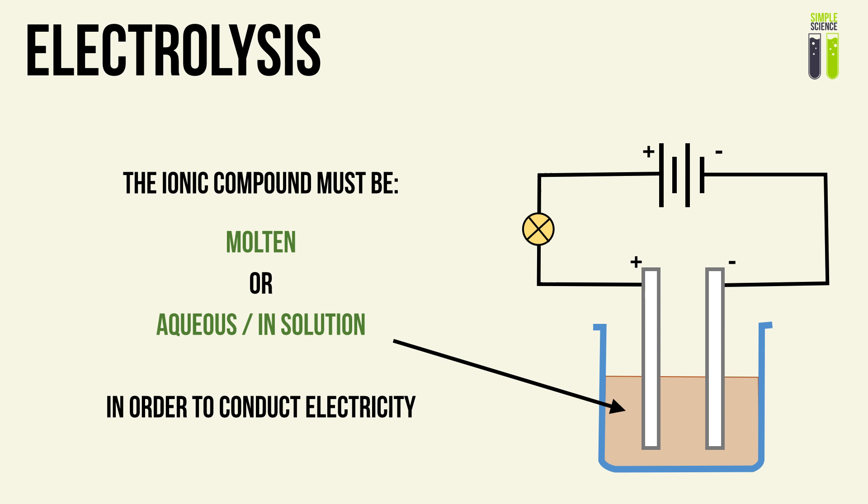Why? Because if we have these ions in molten liquid or in aqueous solution, these ions are allowed to move within the liquid or solution. And just like electrons in a wire, moving charge will result in a way in which you can carry electricity.